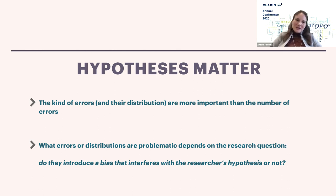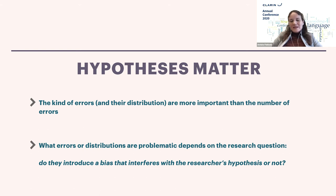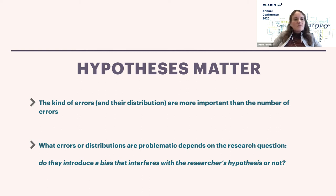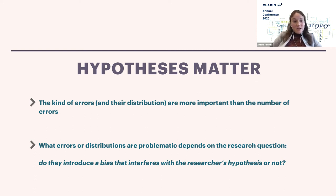This is the first point where hypotheses matter: the kind of errors and their distribution are very often more important than the number of errors. But what errors or distribution are problematic depends on the research question — specifically, whether the bias introduced is interfering with the researcher's hypothesis. If you just want a general look at overall sentiment increasing or decreasing, the precision-recall difference may not matter much as long as it is consistent over time. But if you want to know whether something is more positive than negative, it matters a lot.